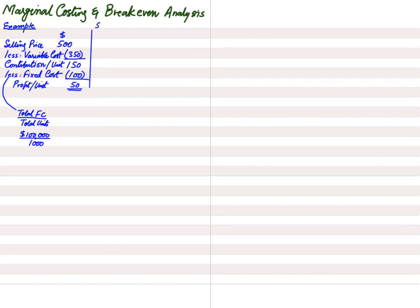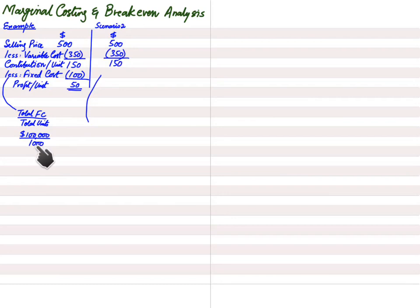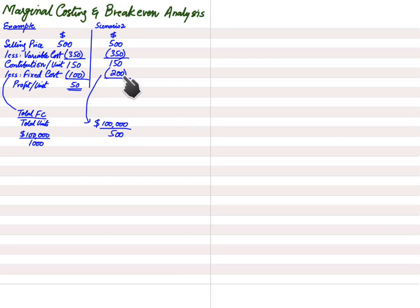Scenario two: same shirt sold for $500, bought for $350, contribution $150. But after a month, we realize we overestimated sales — only 500 shirts can be sold in an average month. Fixed cost per shirt becomes $200 ($100,000 ÷ 500). Now contribution is $150 but fixed cost is $200, so $50 is a negative value — that is a loss per shirt.